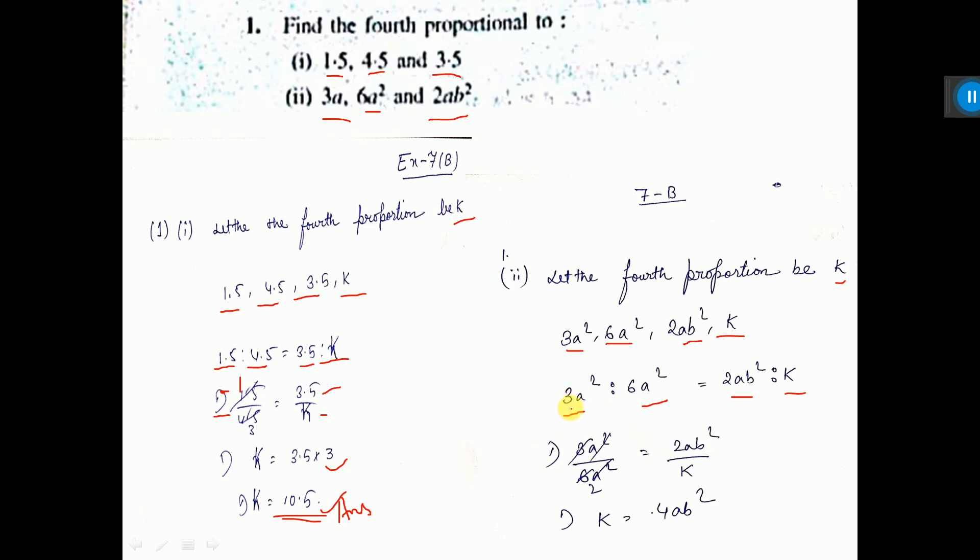Now, ratio means divided by. So this by this is equal to this by this. Now see cancellation: 3, 6, A squared, A squared cancel. Now do cross multiplication. K into 1 is equal to K, and 2 into this, that is equal to 4AB squared. That is the sum.